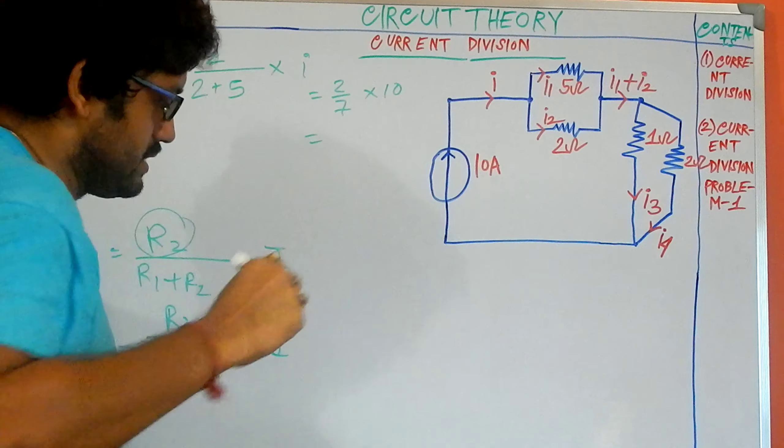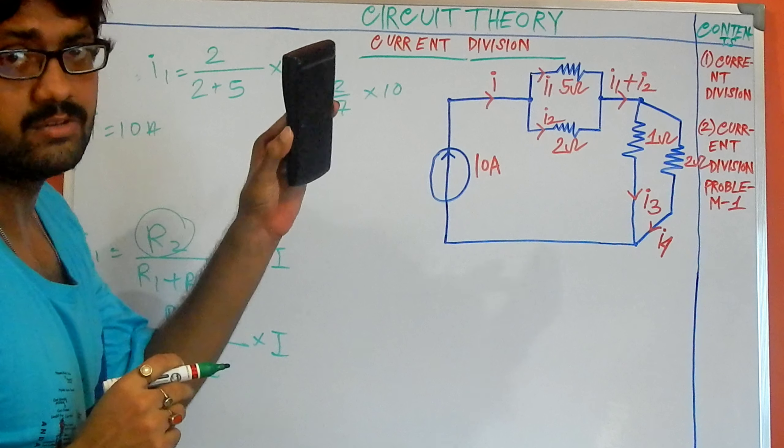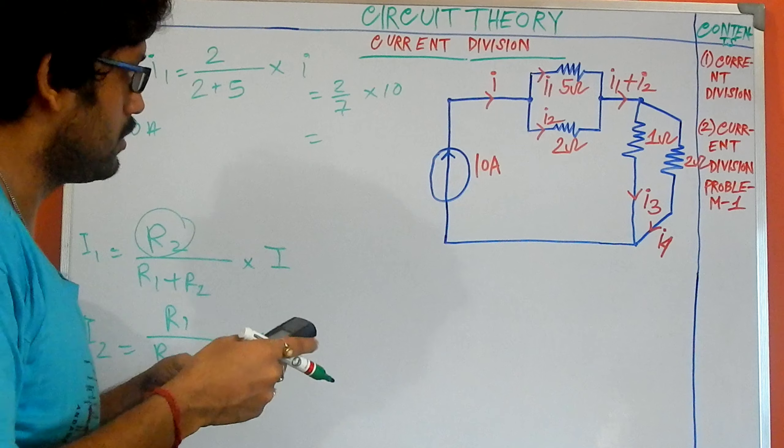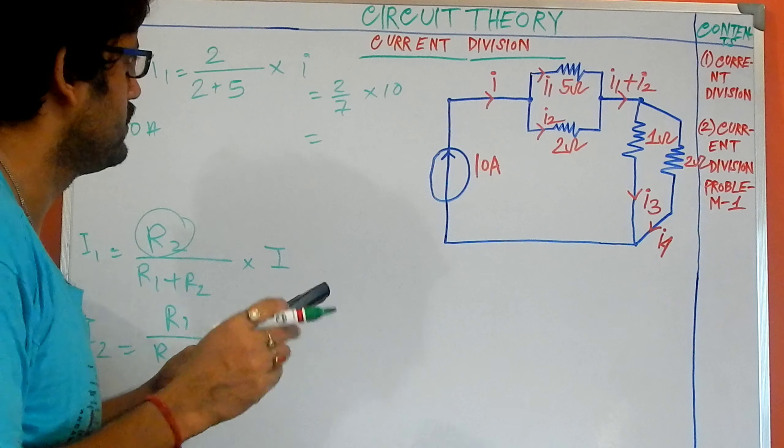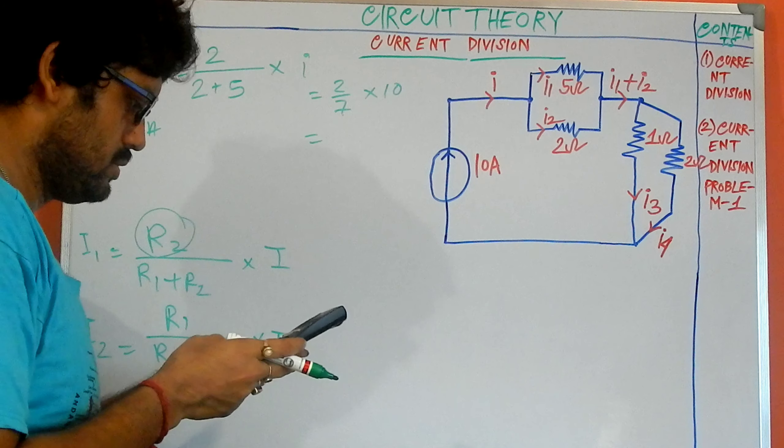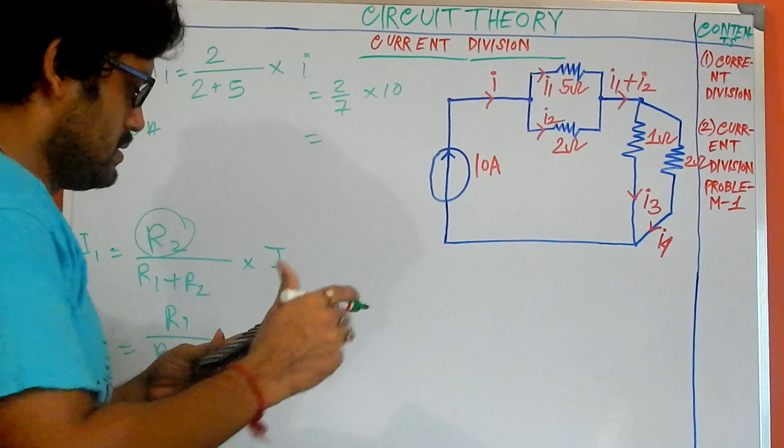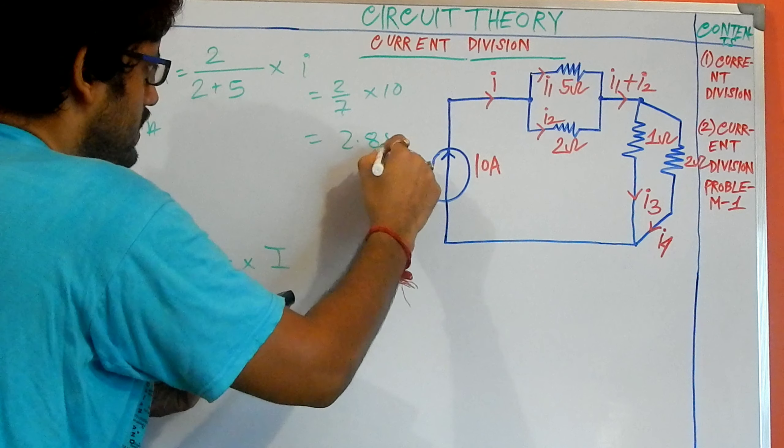20 by 7. By using this calculator, I want to find out the value of this expression. 20 divided by 7 equals 2.857.